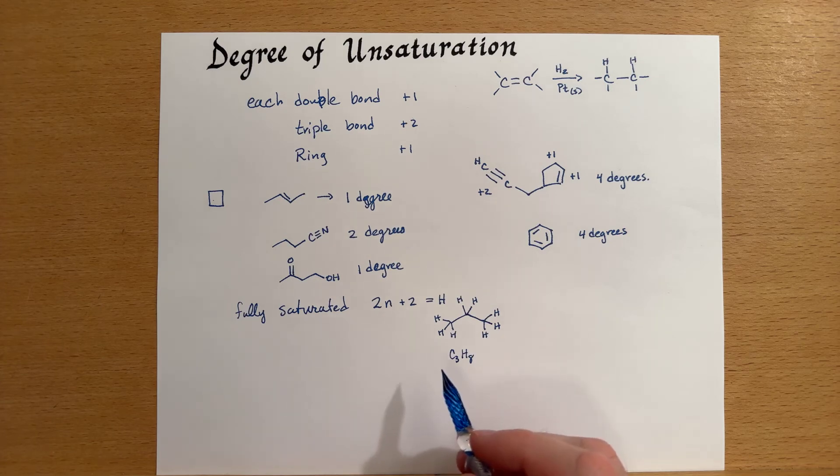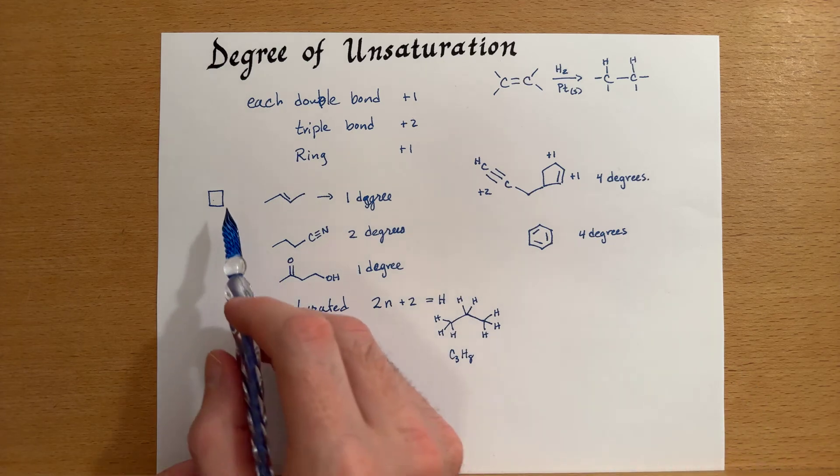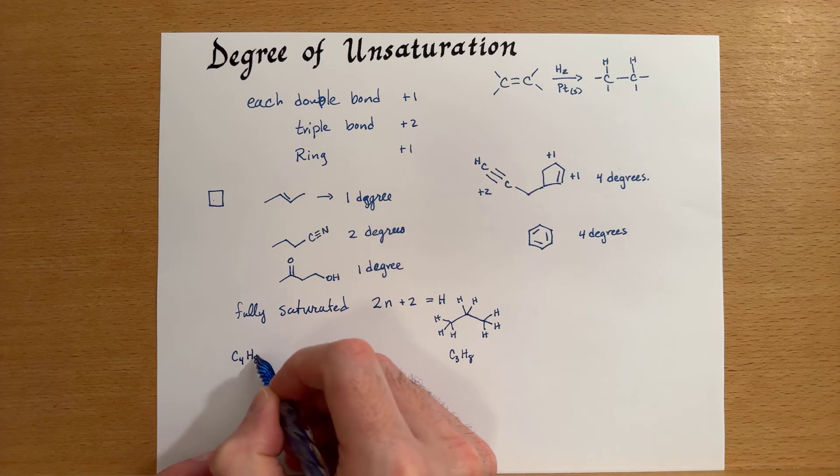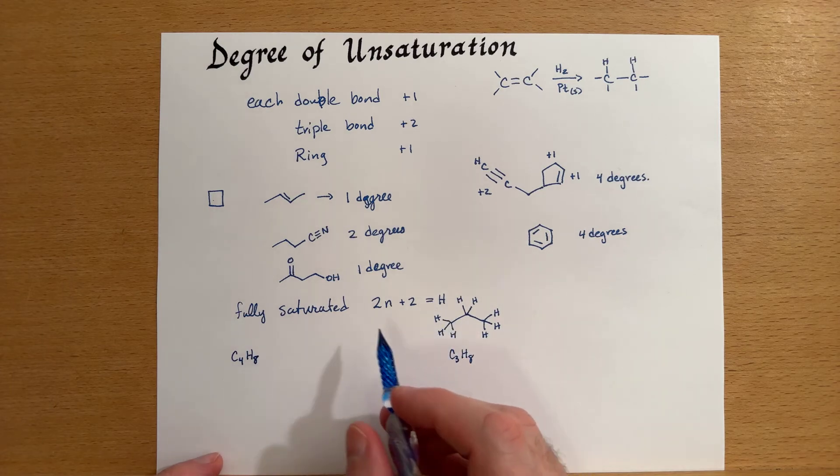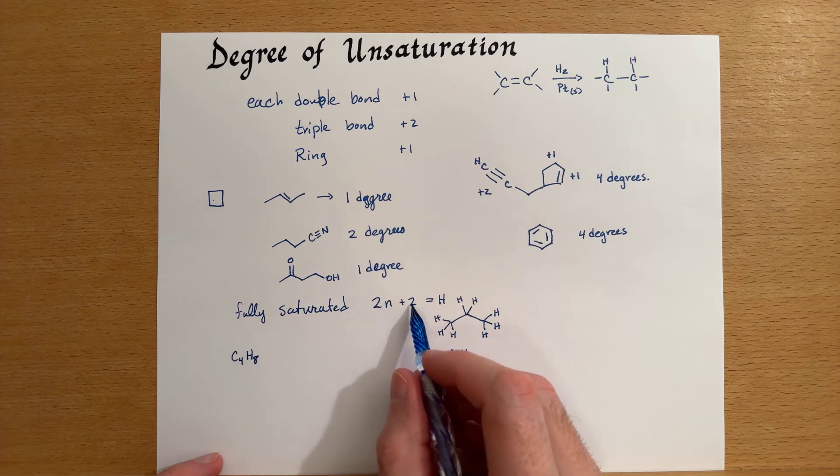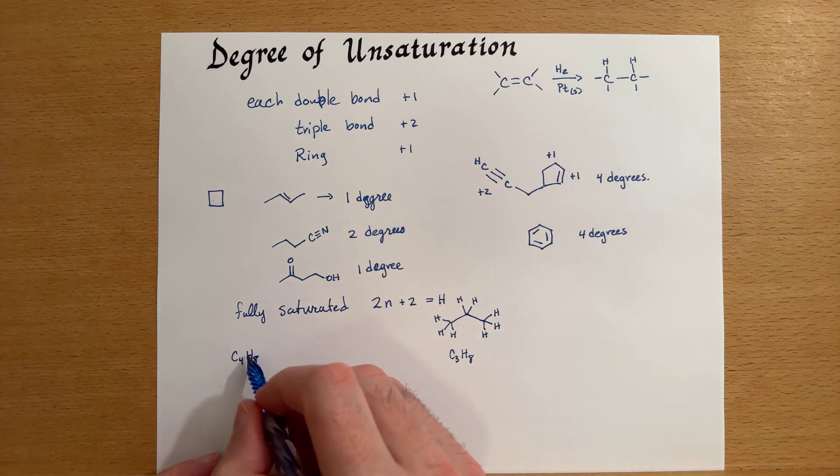So if we see a formula that has a certain number of carbons and hydrogens, and we can go back to our C4H8. And if we were to do this calculation and look for the fully saturated, we would expect eight plus two, which is 10. So fully saturated would be 10 hydrogens. We're missing two.